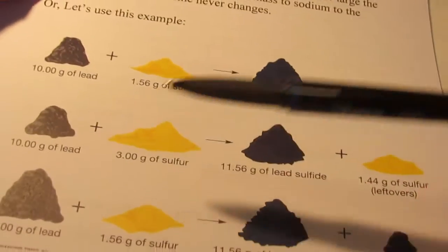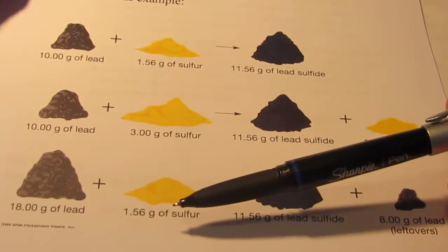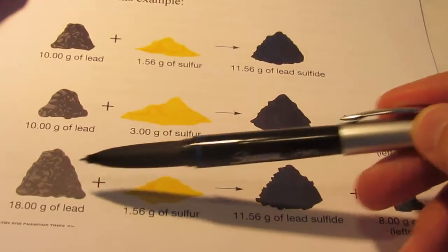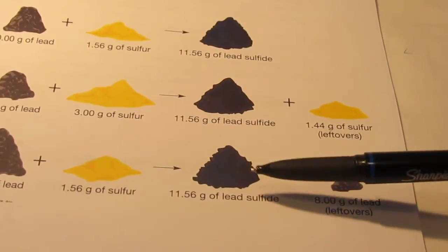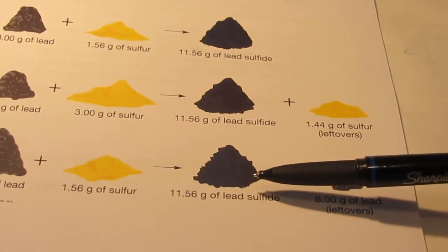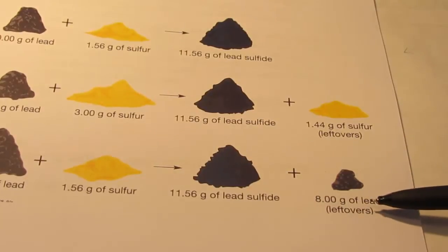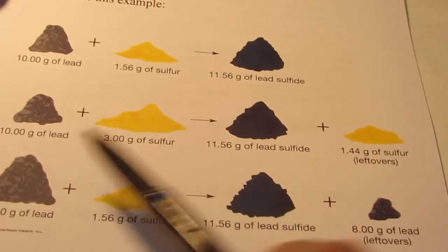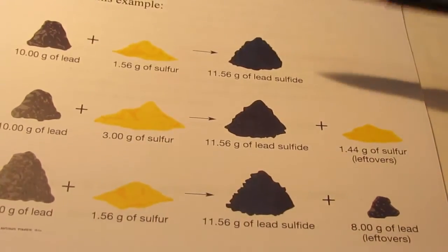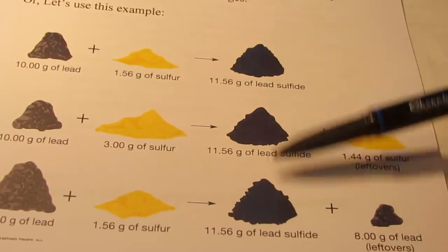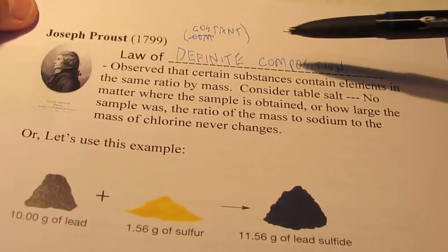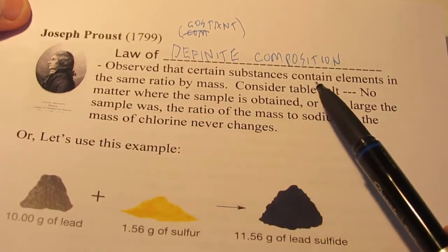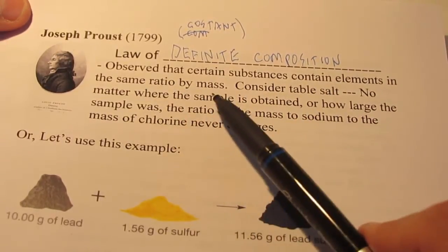Now we could flip that around. Let's say we used 1.56 grams of sulfur this time, and we used 18 grams of lead, and I reacted those together. I would still produce 11.56 grams of lead sulfide, but this time I'd have some excess lead, an 8 gram sample of lead leftover. So you'll notice no matter how I react these or in what ratio I react them in, the product will always combine with a definite composition. Once again, certain substances contain elements in the same ratio by mass.